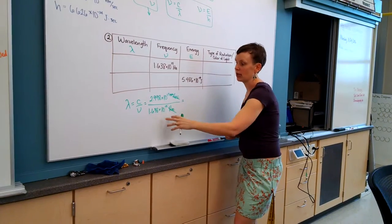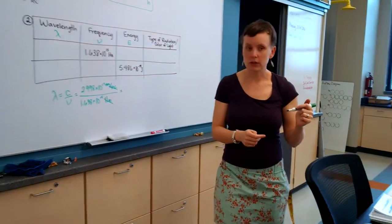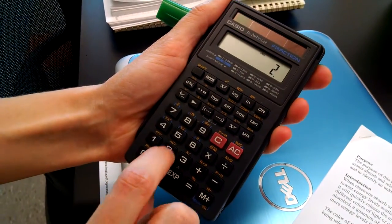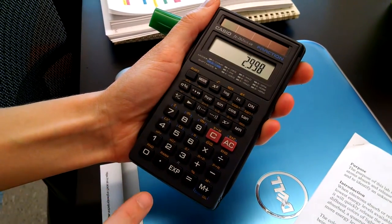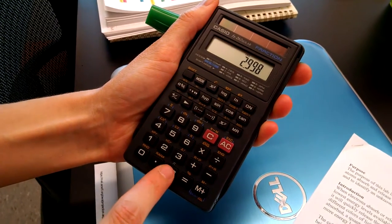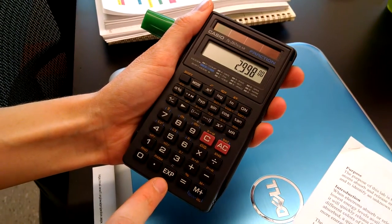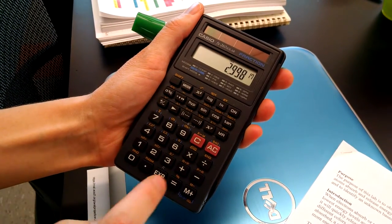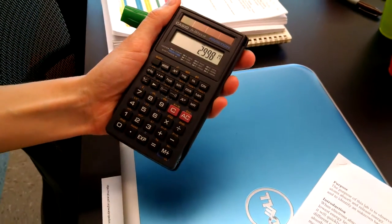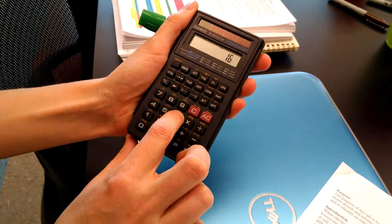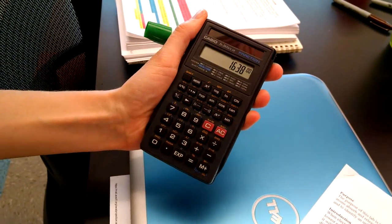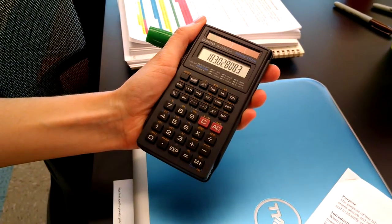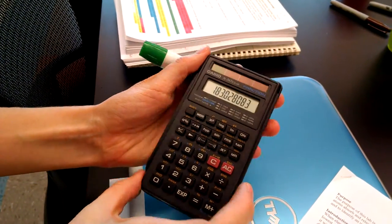To punch these into your calculator, it's a bit of a scientific notation process. You would punch in 2.998, then hit this EXP button down at the bottom. On some calculators it'll say EE instead of EXP. Then type in the exponent, 17, then divide it by 1.638 EXP 15, and we get this answer, 183.028.